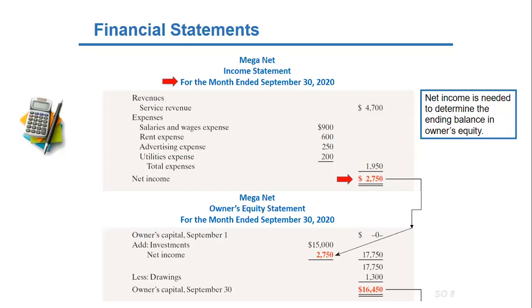The second statement is the owner's equity statement. It summarizes the changes in owner's equity for a specific period of time. The time period is the same as that covered by the income statement.